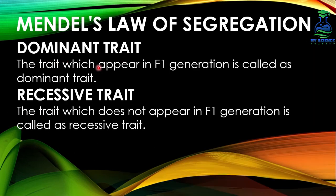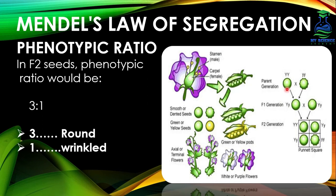Dominant trait: the trait which appears in the F1 generation is called the dominant trait. Recessive trait: the trait which does not appear in the F1 generation is called the recessive trait. In the monohybrid cross of round and wrinkled seed shape plants, round seed shape appeared in F1, so it is the dominant trait, while wrinkled seed shape did not appear in F1, meaning it is the recessive trait.